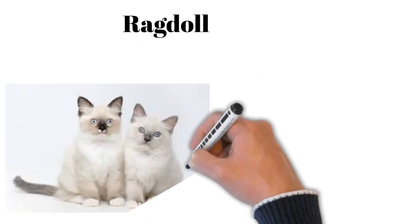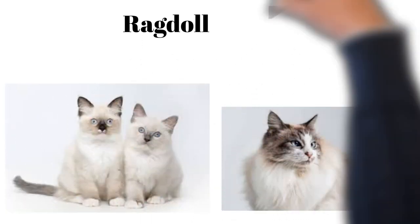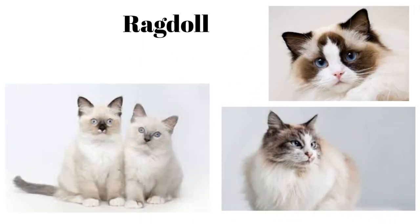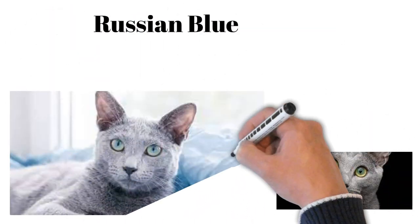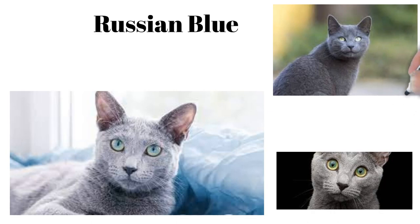Ragdoll: blue-eyed, semi-long hair, goes limp when held, gentle, calm. Russian Blue: blue-gray coat, green eyes, quiet, loyal, and shy.